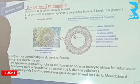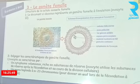Les caractéristiques du gamète femelle, par comparaison avec le spermatozoïde : un cytoplasme volumineux riche en substances de réserve, avec un noyau haploïde qui, lors de la fécondation, va rétablir la diploïdie.